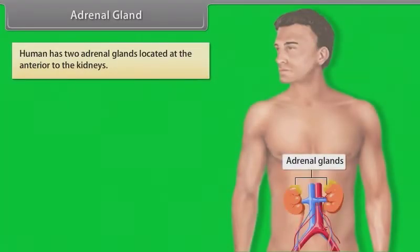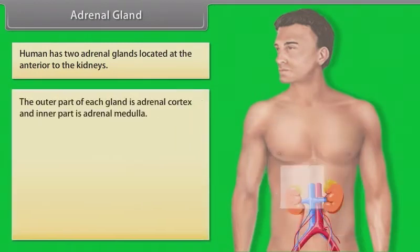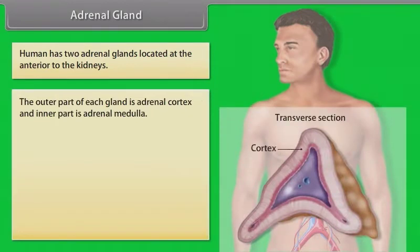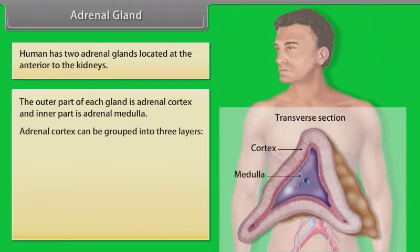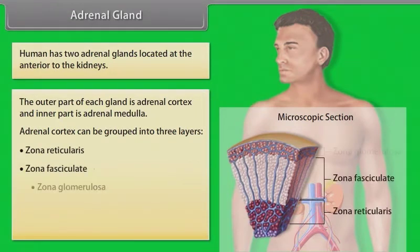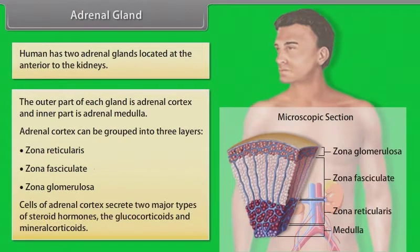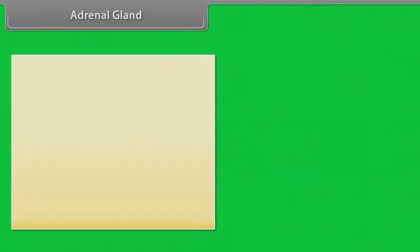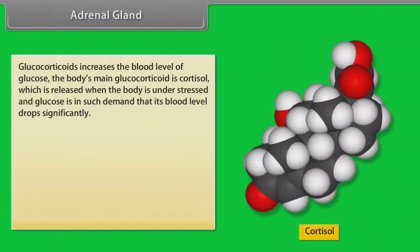Humans have two adrenal glands located at the anterior to the kidneys. The outer part of each gland is the adrenal cortex and the inner part is the adrenal medulla. The adrenal cortex can be grouped into three layers: zona reticularis, zona fasciculata, and zona glomerulosa. Cells of the adrenal cortex secrete two major types of steroid hormones: glucocorticoids and mineralocorticoids.